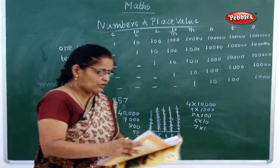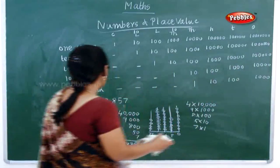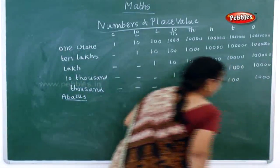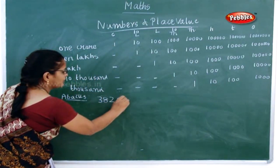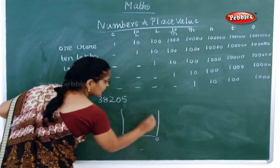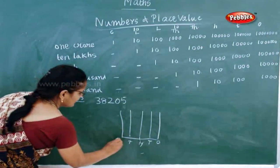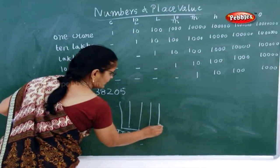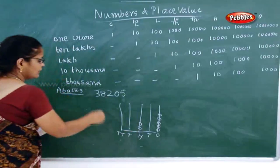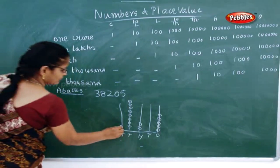Now next one — we will go on for the practice time given in your book. 38,205. Now how will you put it in the abacus? Very easy. Ones, tens, then what is the next place value? Hundreds, then thousands, next one is ten-thousands. Now what is it here? Five — five rings should be here in the ones: one, two, three, four, five. Now here nothing should be there — so don't draw any ring. Then here two rings: one, two. Now here eight rings: one, two, three, four, five, six, seven, eight. Now here three: one, two, three.